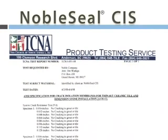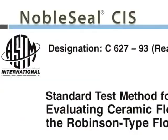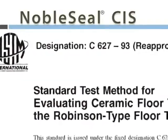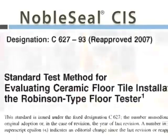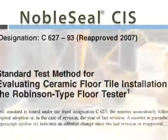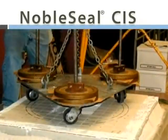All Noble Seal sheets have been tested to ANSI A118.12 and are rated high performance, and all Noble Seal sheets are rated extra heavy in Robinson Floor Tests. This provides the assurance that you are getting the best possible protection for your custom tile installation.